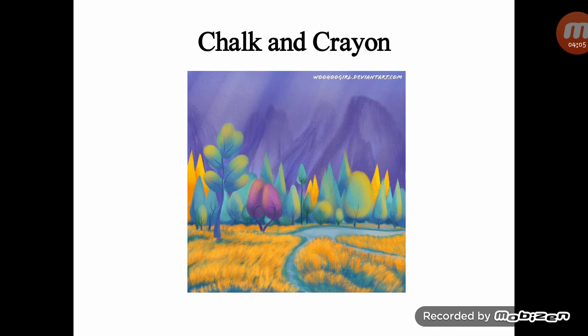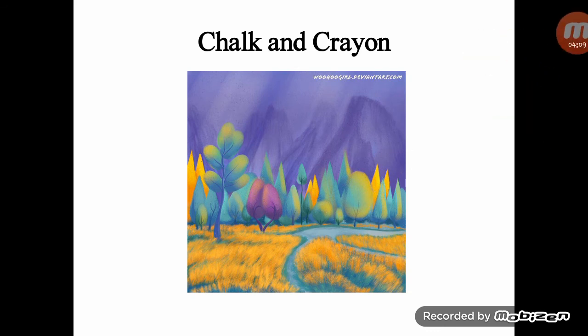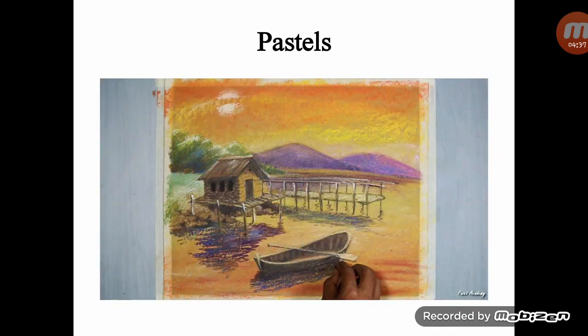Chalk and crayon are similar but differ in their binder — the substance that holds the pigment together. Chalk has non-fat binders, while crayon has fat and wax binders. Chalk blends well and can be overlaid.